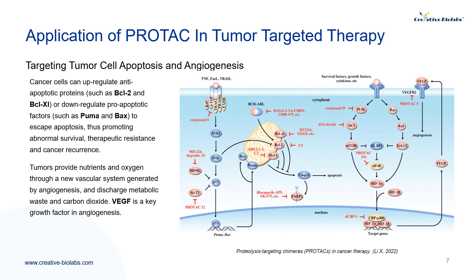Tumors provide nutrients and oxygen to renew the vascular system generated by angiogenesis and discharge metabolic waste and carbon dioxide. Vascular endothelial growth factor, as a key growth factor, can specifically recognize VEGFR to induce the formation of a new vascular system. Blocking VEGFR signals to inhibit angiogenesis has become an important strategy in cancer treatment.